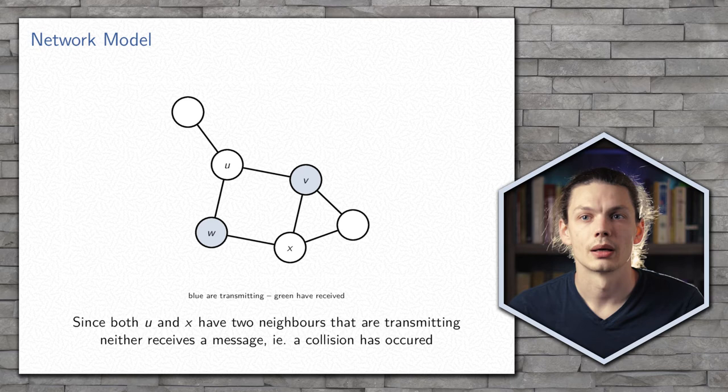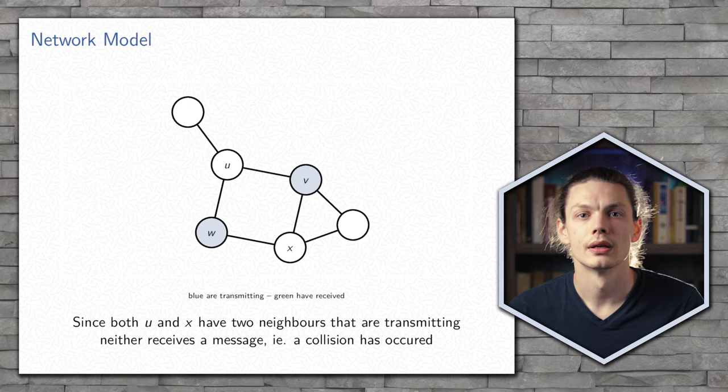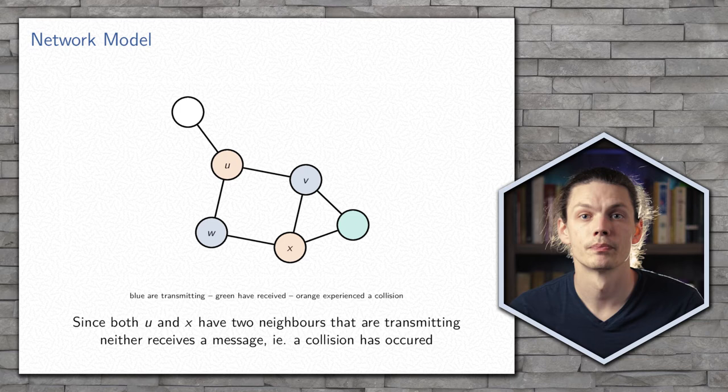In this last example, we have two processors, U and X, that both have multiple neighbors that are currently transmitting. In this case, we say that a collision has occurred, and because of the interference between the transmissions, neither U nor X will receive a message.